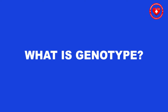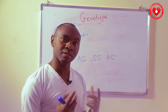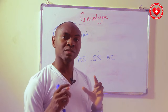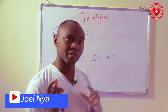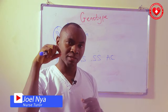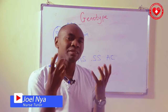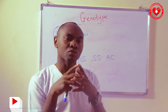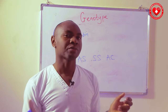What is genotype? Genotype is a test or a system that detects the type of hemoglobin located in your red blood cells. We all know that hemoglobin is the pigment, the substance in the red blood cells that carries oxygen. It binds to oxygen molecules, and oxygen is very important for us.